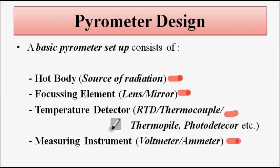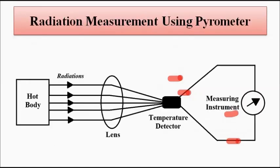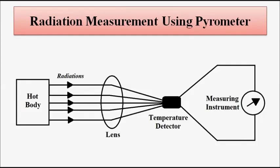The basic essential thing is that we must avoid direct contact of the transducer with the source of radiation. The temperature transducer will not make any direct contact. Looking at the figure showing radiation measurement using a pyrometer with a lens as the focusing element: the hot body, which is the source of radiation, is focused by the lens onto one particular spot where a temperature transducer is placed — which can be a thermocouple, RTD, or thermistor. The temperature detector gives an output in terms of temperature relating to voltage or resistance change, and that is measured with the measuring instrument.